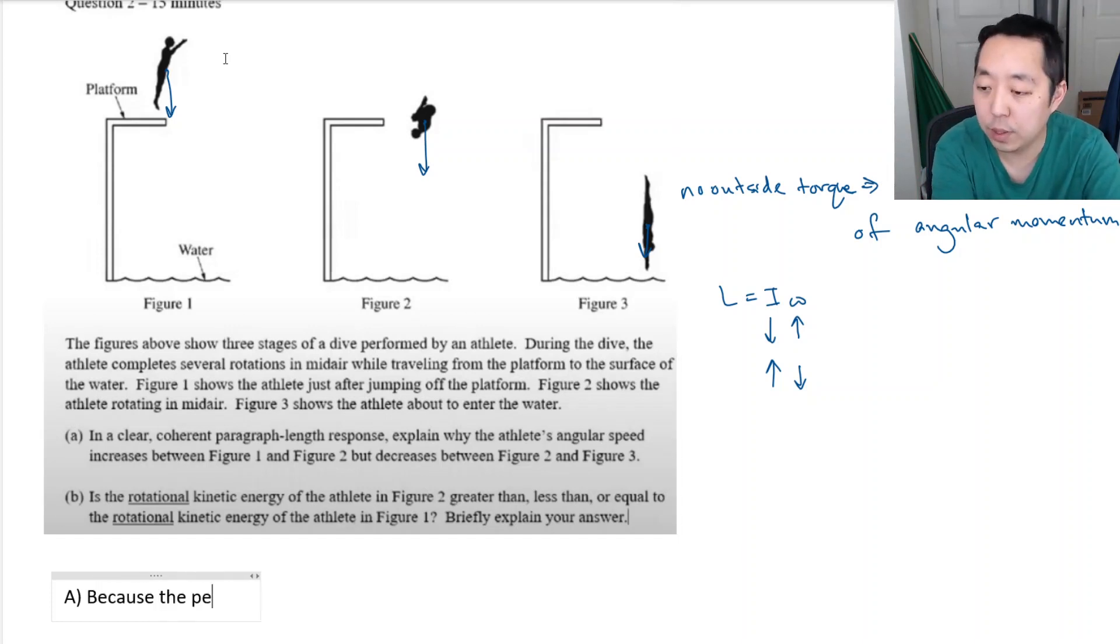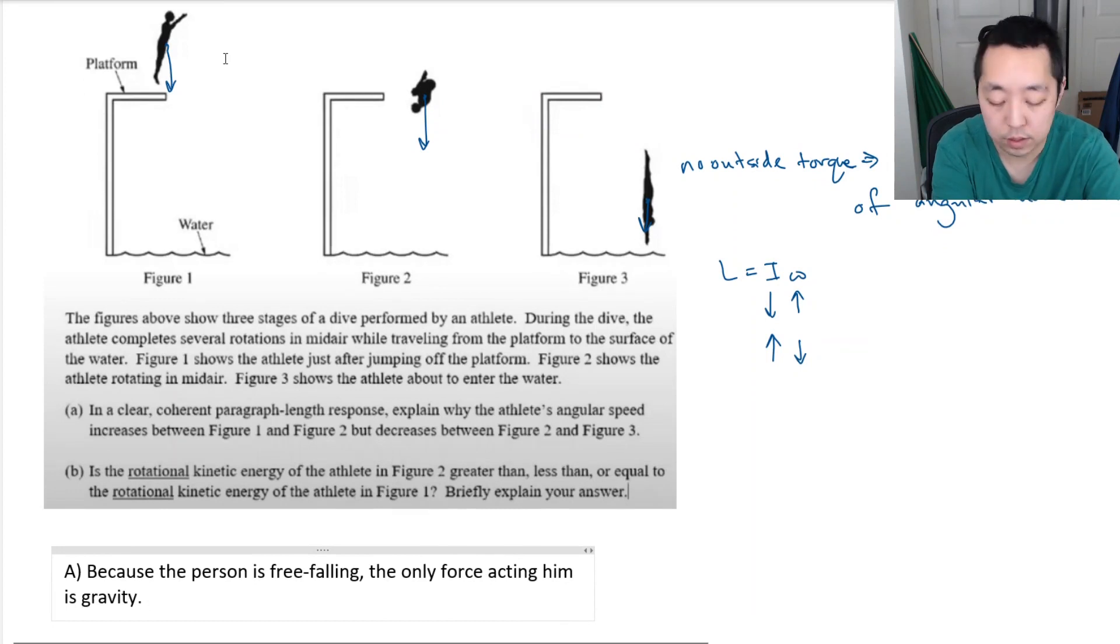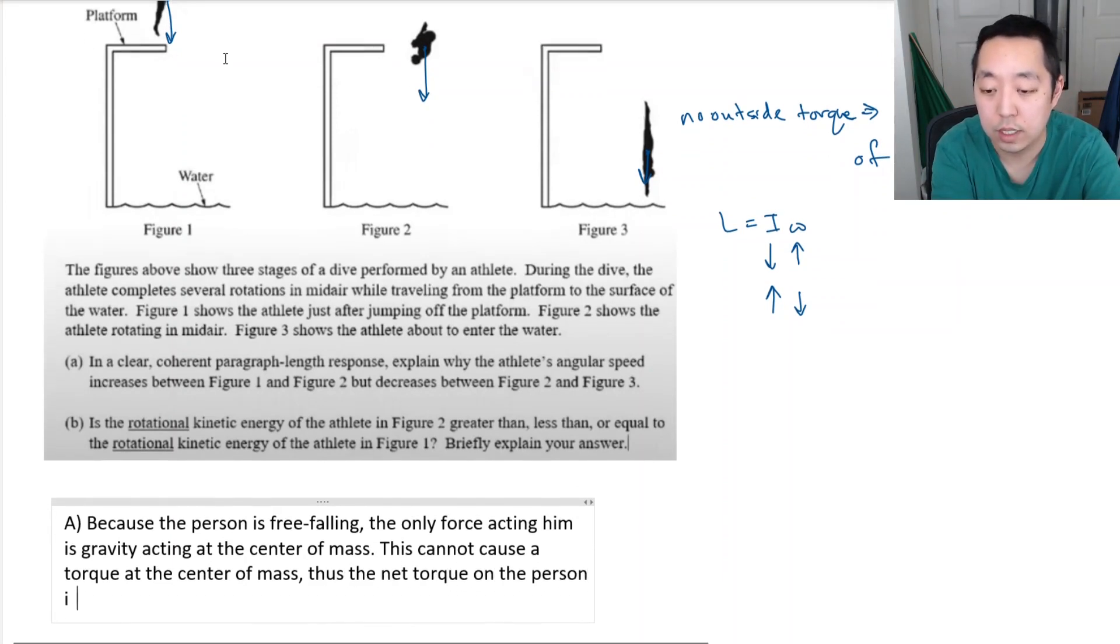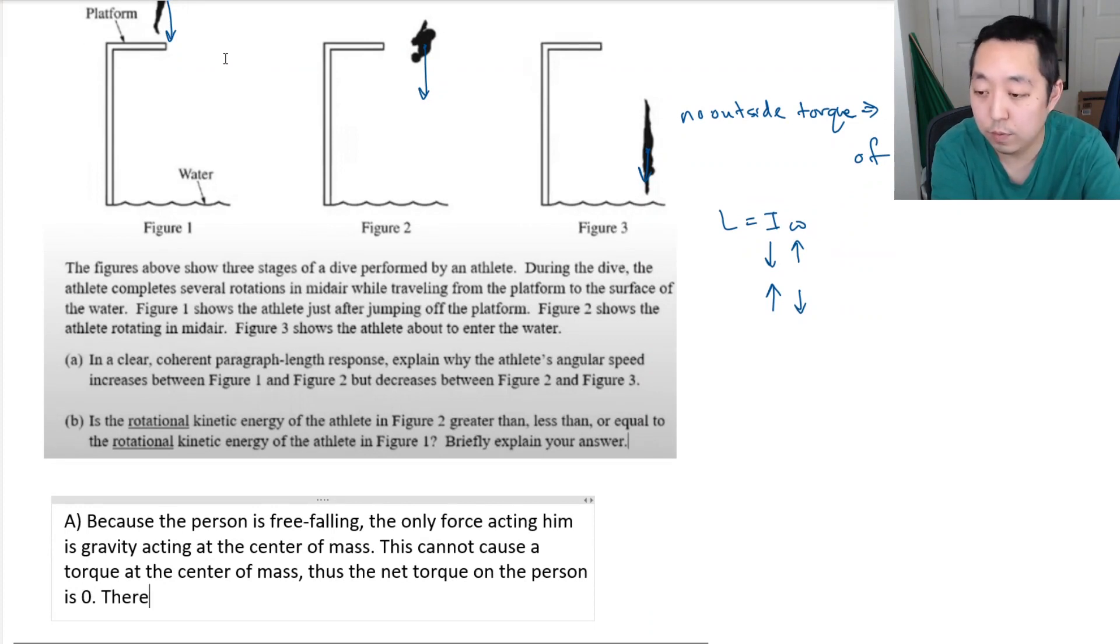So let's type that up. Let's say, because the person is free-falling, the only force acting on him is gravity, acting at the center of mass. This cannot cause a torque at the center of mass. Thus, the net torque on the person is zero.